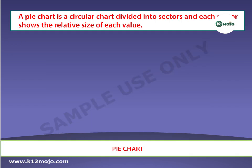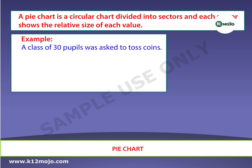A pie chart is a circular chart divided into sectors, and each sector shows the relative size of each value. Let us take an example where a class of 30 pupils was asked to toss coins. The results were 13 heads and 17 tails. Since we have 30 results, we divide 360 by 30, so each result is worth 12 degrees.